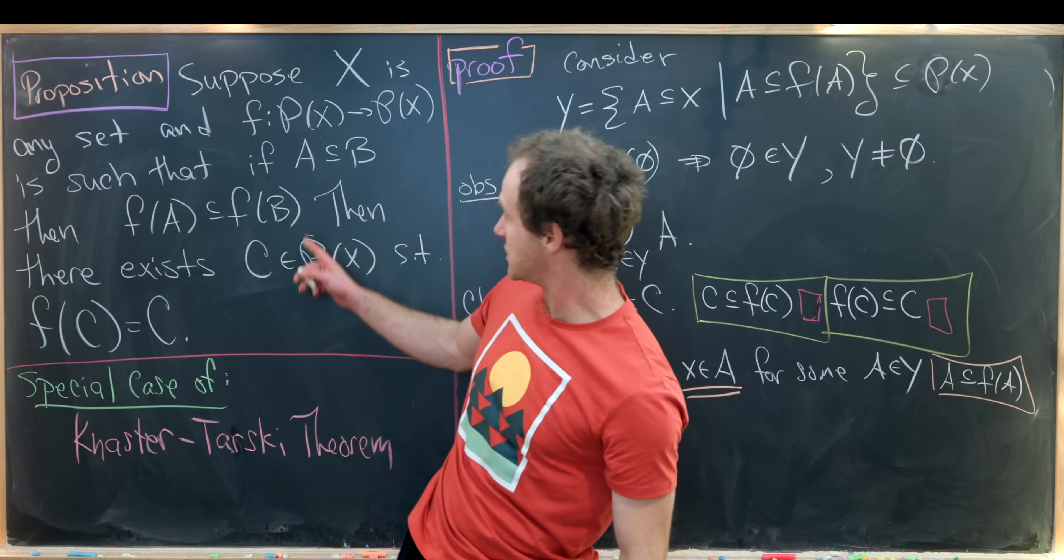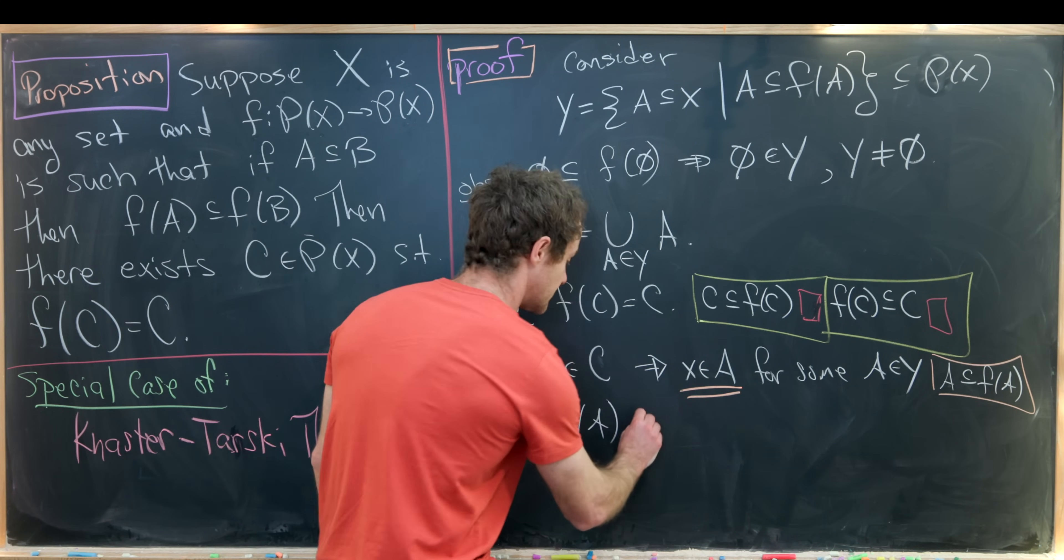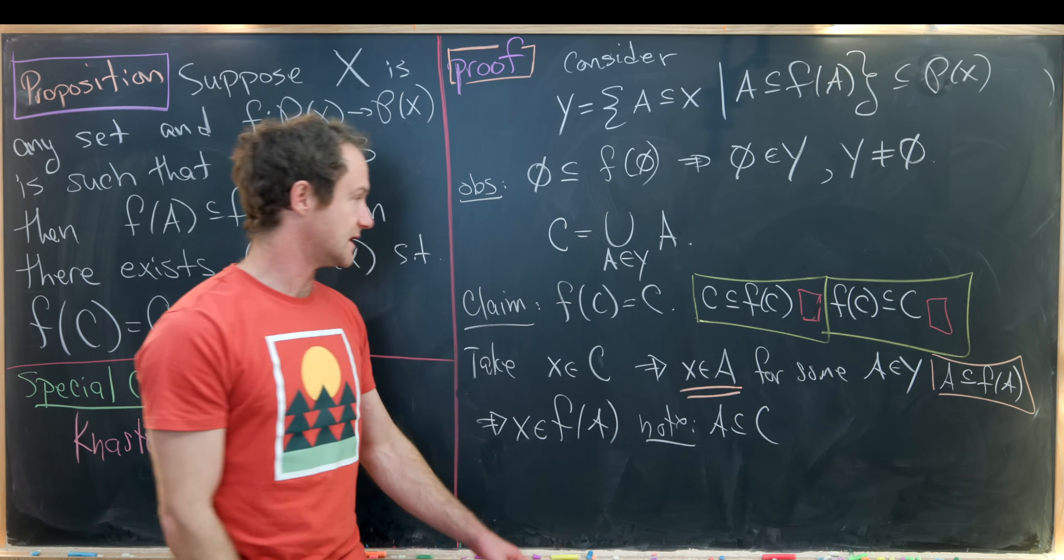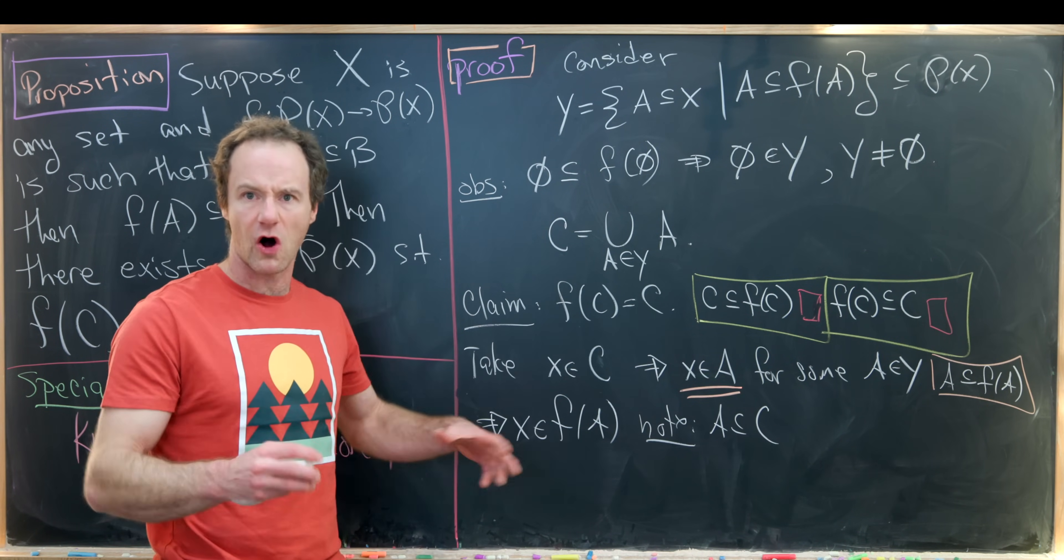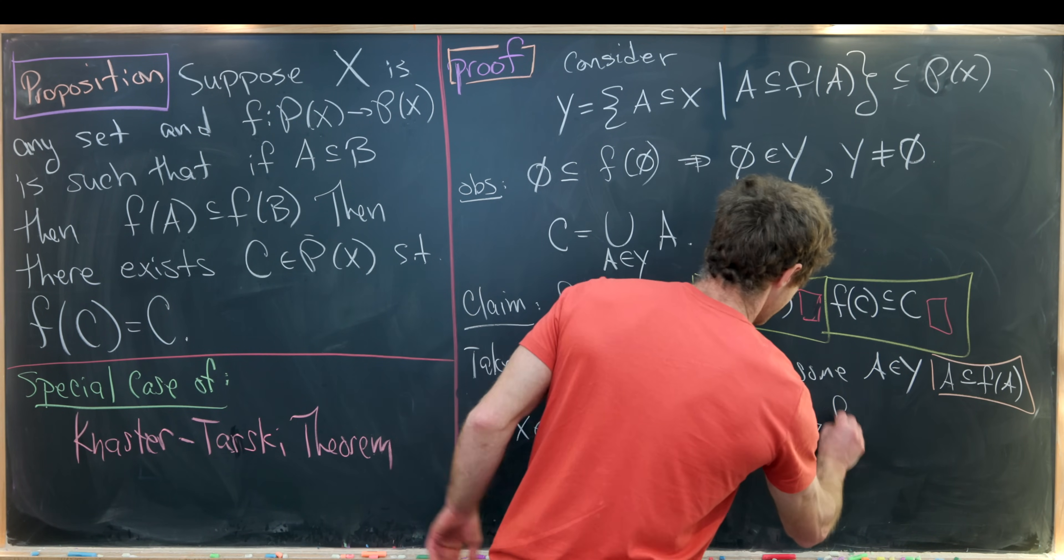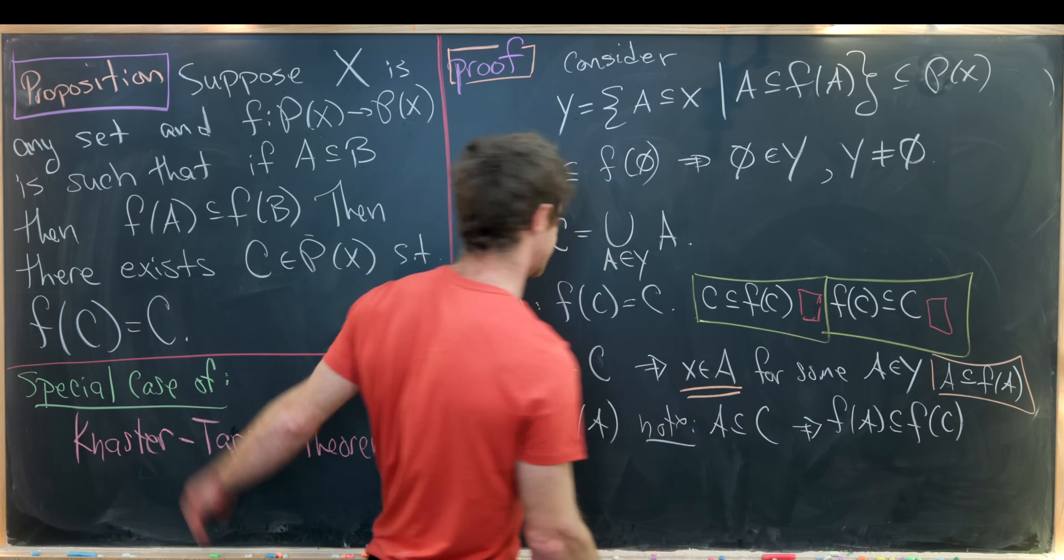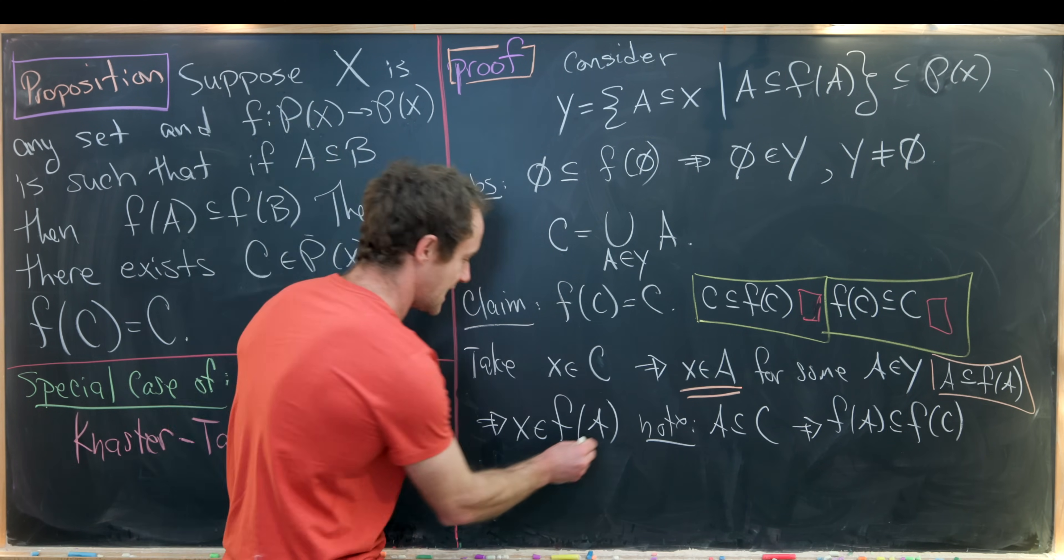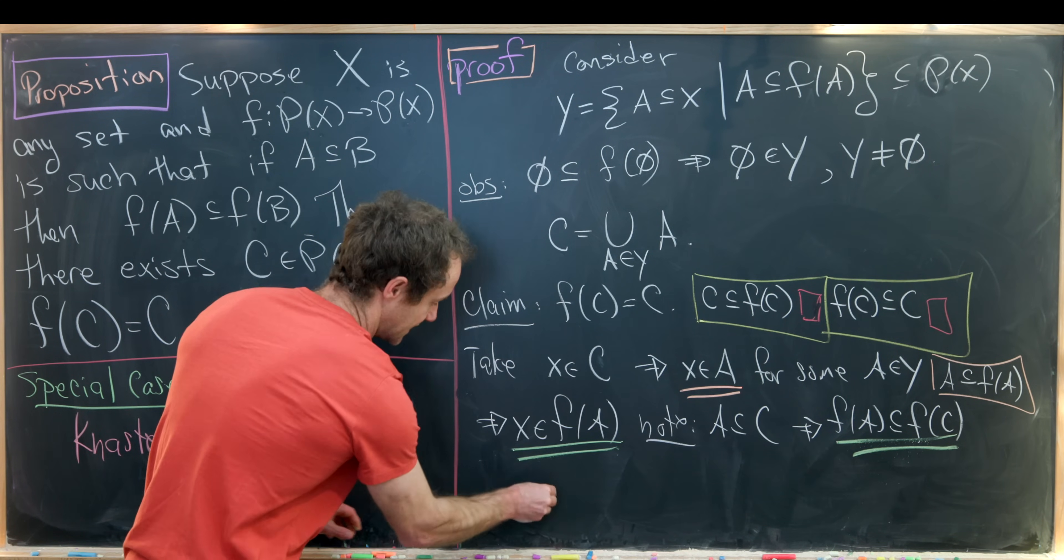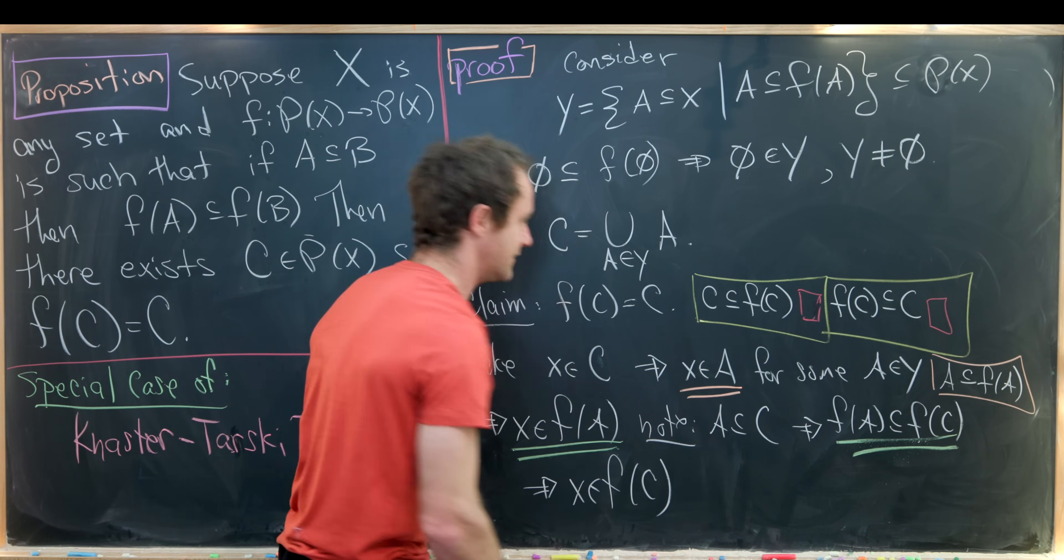But now let's notice that we haven't used this increasing property yet but we're about to. So let's also note that most definitely a is a subset of c because c is constructed out of all of these types of sets. But that means from our given that f of a is a subset of f of c by the increasing property. But now we can put this together with this to tell us that x is indeed an element from f of c.